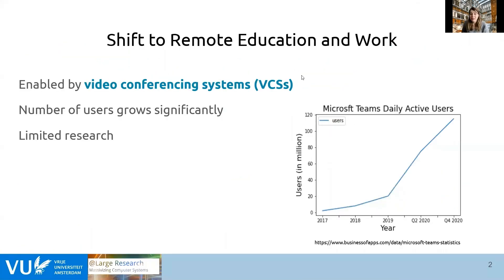The global pandemic has forced society to shift to remote education and work. This shift is enabled by various video conferencing systems such as Zoom, Microsoft Teams, and Jitsi. The number of people using these systems grows significantly over time, as illustrated by this graph.